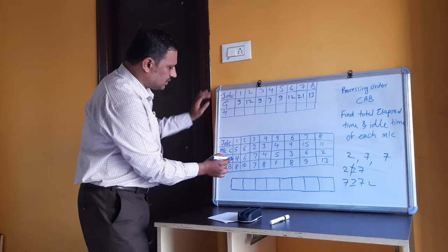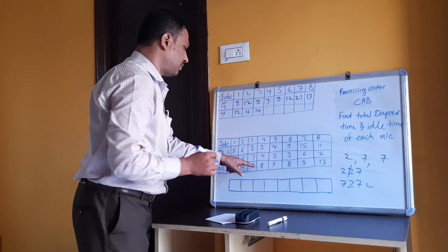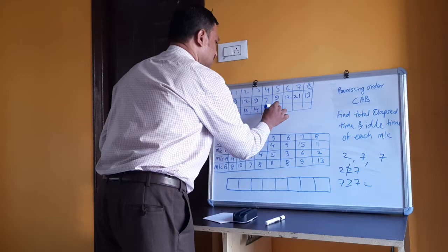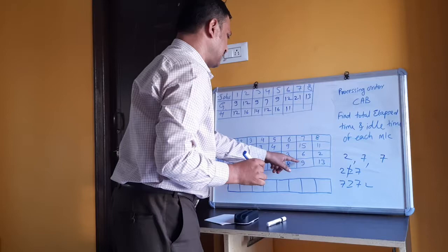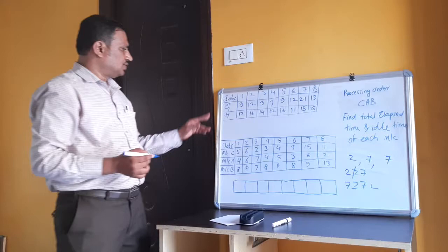For machine H: 4+8=12, 6+10=16, 7+7=14, 8+4=12, 5+11=16, 3+8=11, 9+6=15, 2+13=15. That completes the G and H tables.